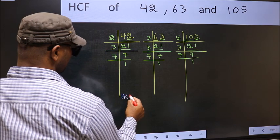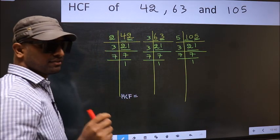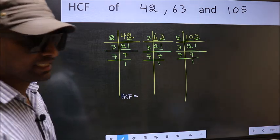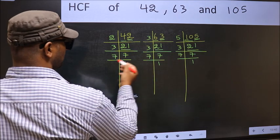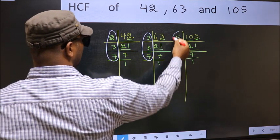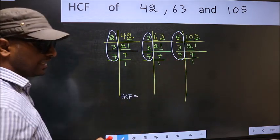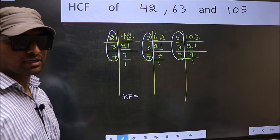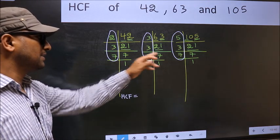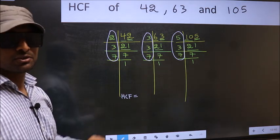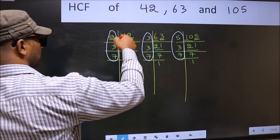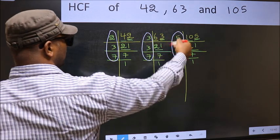Therefore, HCF is, HCF is the product of numbers which should be present in these 3 places. That is here, and here, and also here. So now, let us find the numbers which are present over here, here, and also here.